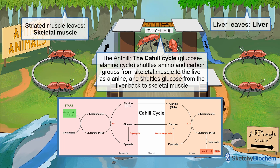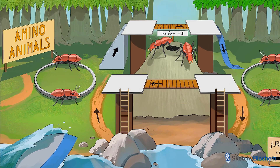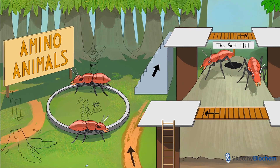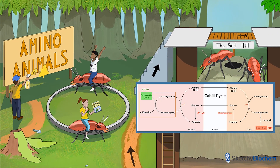Just a heads up: everything happening to the left of the anthill takes place in skeletal muscle, and everything happening to the right takes place in the liver. If you look really closely, you'll notice that the leaves in the back left trees look like striated skeletal muscle and the leaves in the back right trees look like livers. How will you know where ammonia moves through the cycle? Just follow the people in yellow clothing.